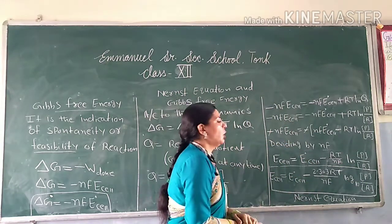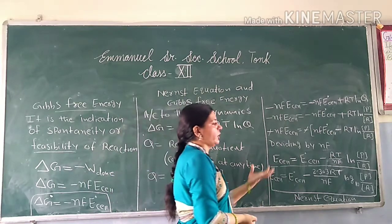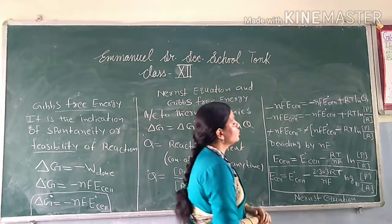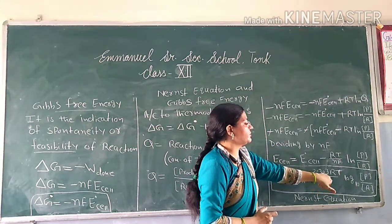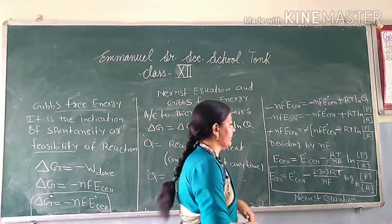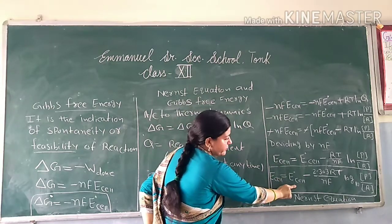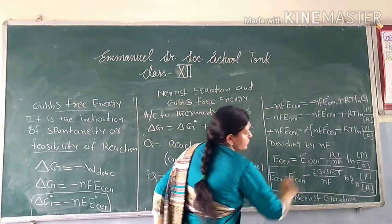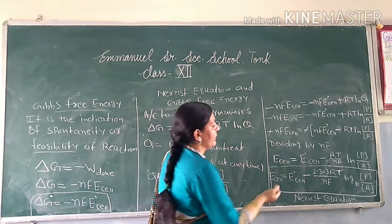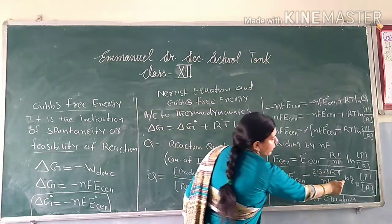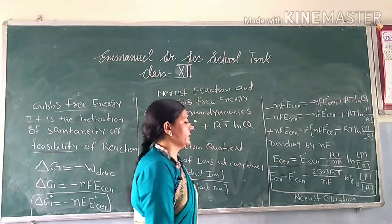Now, to convert natural log to common log, you know that ln = 2.303 × log₁₀. So when you replace natural log, you multiply the value by 2.303. Therefore, E_cell = E°_cell − 2.303 × (RT/nF) × log₁₀(product concentration / reactant concentration). This is our Nernst equation.